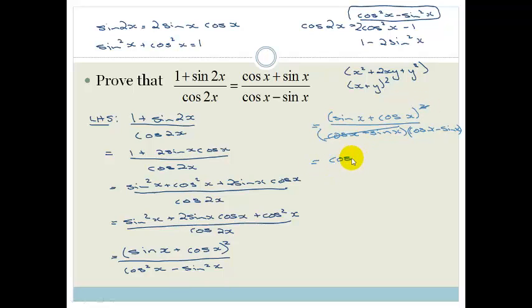And that becomes cos x plus sin x. I'm just rewriting it so that it matches the top, but you don't have to. All over cos x minus sin x and ta-da, it equals the right-hand side. Awesome.